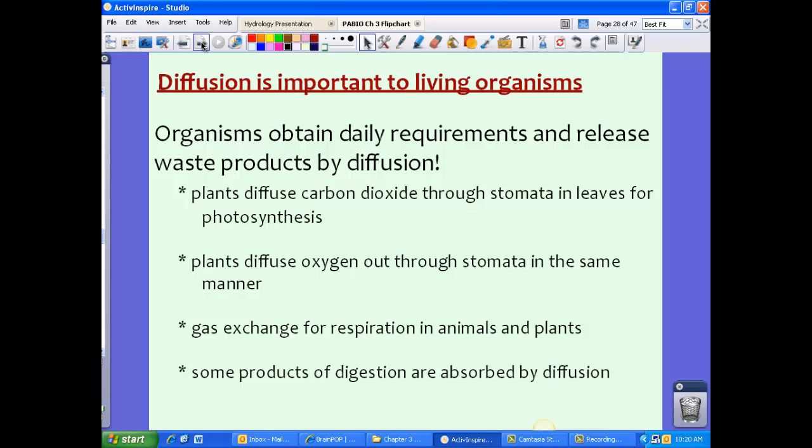Please remember that diffusion is really important to living organisms. Organisms obtain daily requirements and release waste products by diffusion. The needed substances that need to go inside a cell, or those waste products that need to come out, happen because of diffusion. Plants diffuse carbon dioxide through stomata in leaves for photosynthesis. Plants also diffuse oxygen out through stomata in the same manner. Plants diffuse carbon dioxide inside. It's going to diffuse oxygen out because that's a waste product.